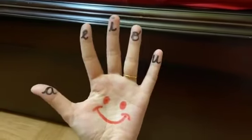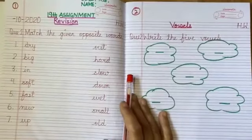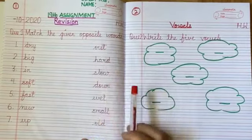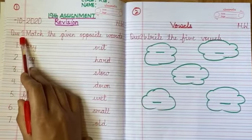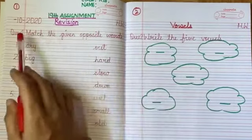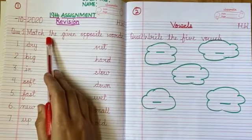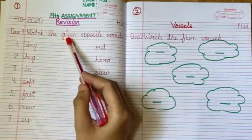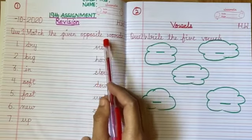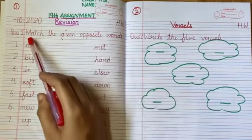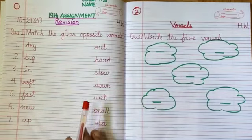Children, this is your 19th assignment revision for KG class. Question number one: match the given opposite words. These are opposite words and you have to match the words with their correct opposite.